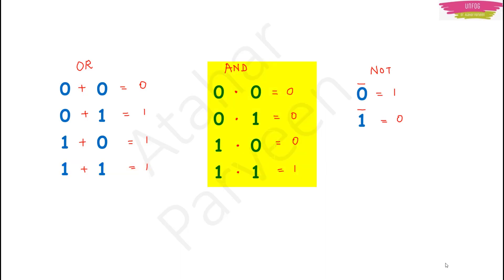In the AND operation, you are multiplying. 0 into 0 will be 0. 0 into 1 will be 0. 1 into 0 will be 0. And 1 into 1 will be 1. You don't need to worry because in maths also, 1 into 1 is 1. For the NOT operation, the complement of 0 will be 1, and the complement of 1 will be 0.